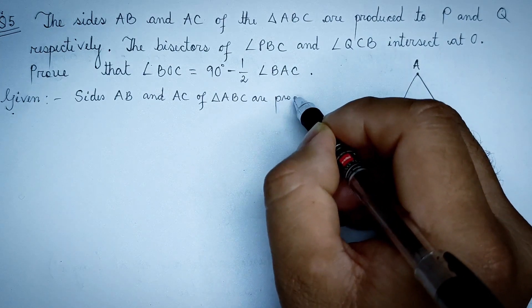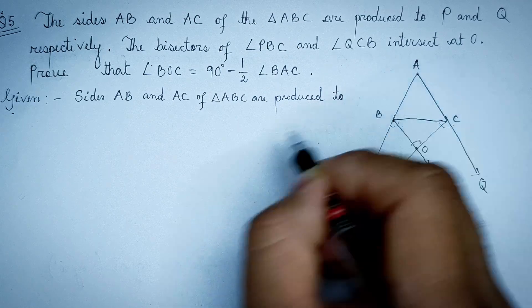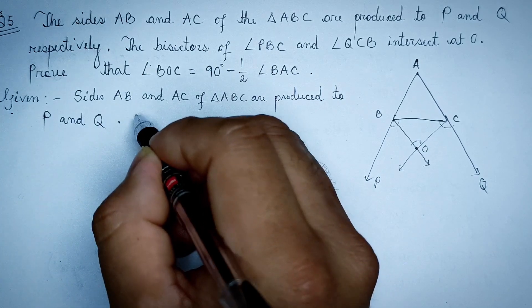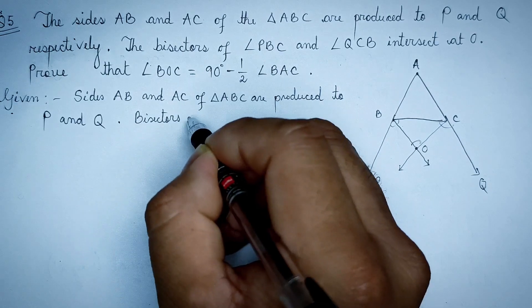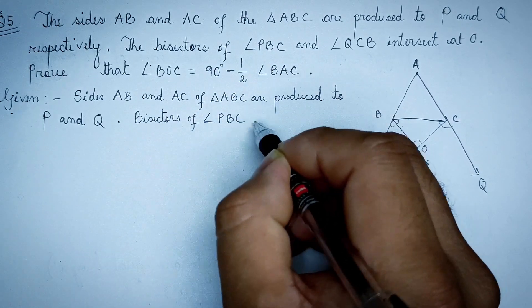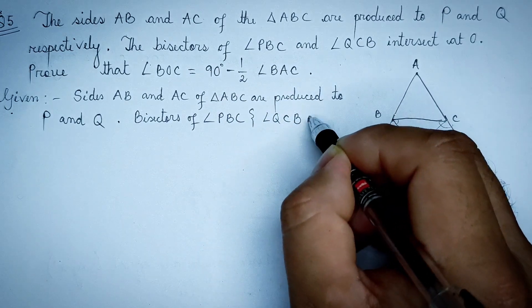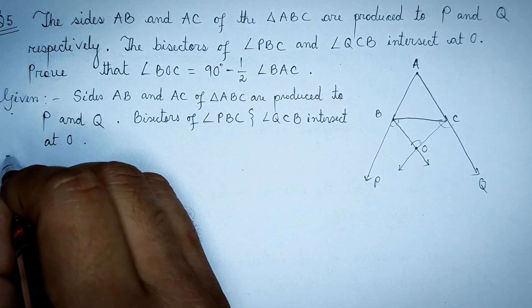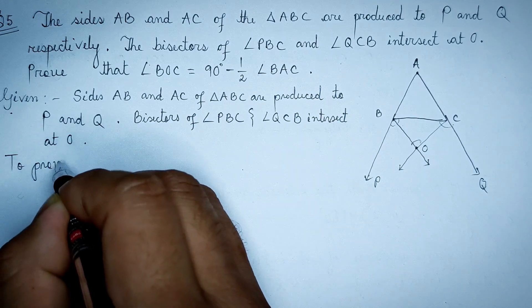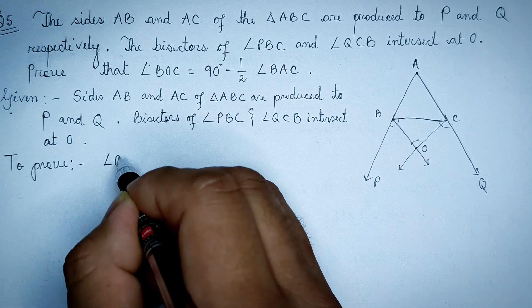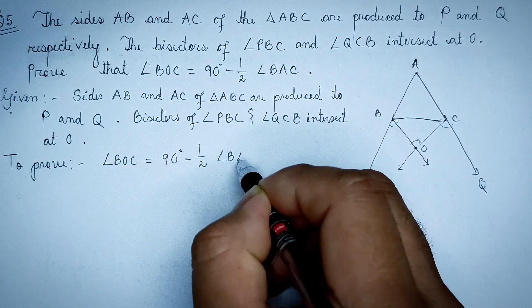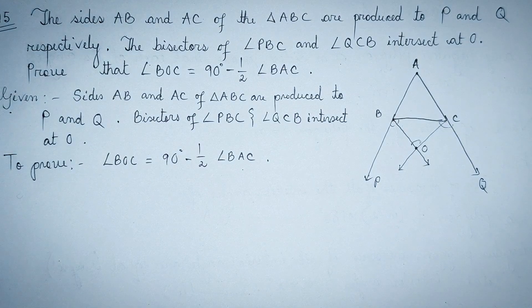R produced to P and Q. The bisectors of angle PBC and QCB intersect at O. To prove that angle BOC is equal to 90 degrees minus half angle BAC.